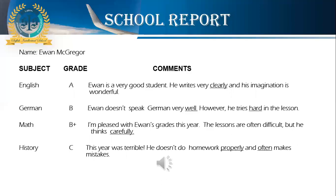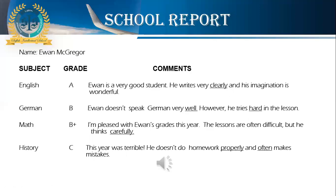Now we are going to do another listening activity related to a school report. Here is Yvonne McGregor's school report. In English he's taking A — Yvonne is a very good student, he writes very clearly and his imagination is wonderful. German: B — Yvonne doesn't speak German very well, however he tries hard in the lesson. Math: B plus — I'm pleased with Yvonne's grades this year, lessons are also difficult but he thinks carefully. History: C — this year was terrible, he doesn't do homework properly and often makes mistakes. In this report you can see there are some underlined words.